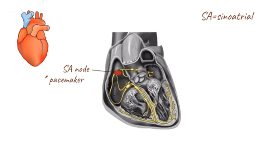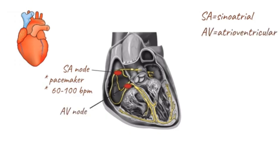The SA node is located in the right atrium and automatically generates an electrical impulse at a rate of 60 to 100 times per minute. These electrical impulses from the SA node initiate atrial contractions and then travel to the atrioventricular node, or AV node, located in the atrioventricular junction.